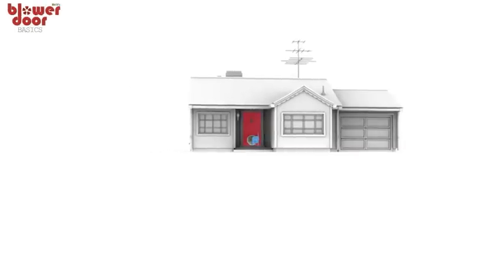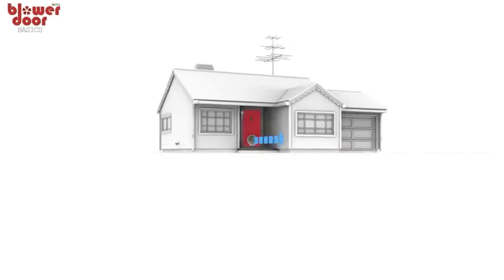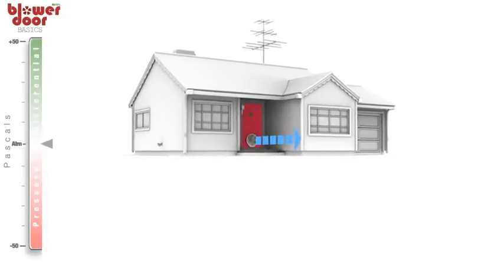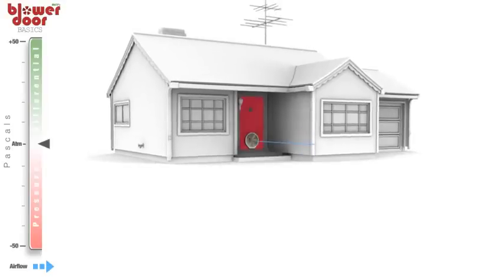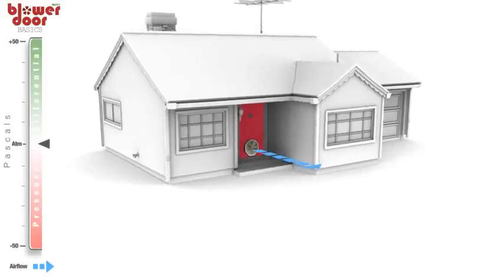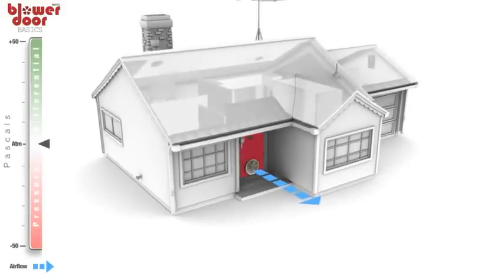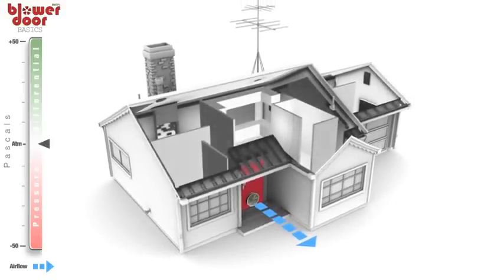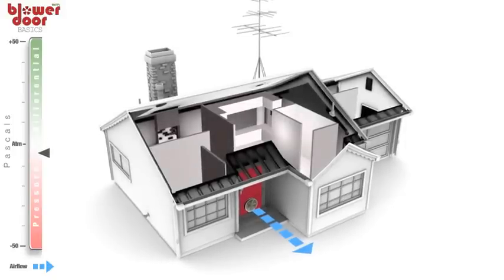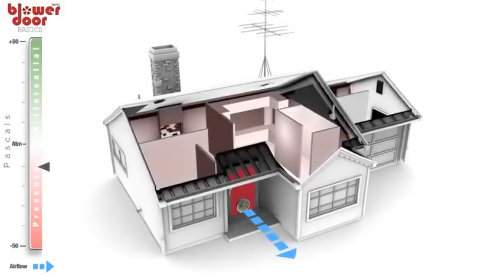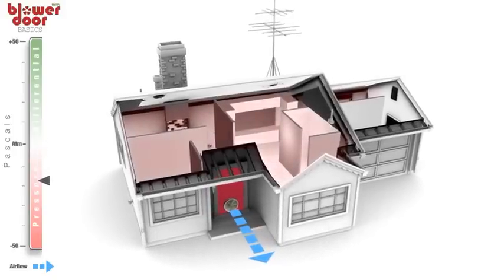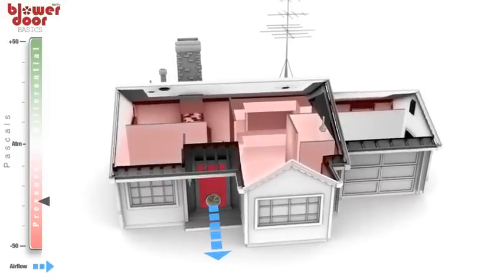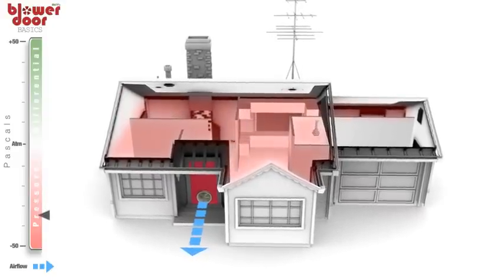When we run a blower door test, air from inside the home is pushed out by the fan, creating a pressure differential between the inside and outside environments. In its natural state, the pressure inside a home is the same as it is outside, right around atmospheric pressure, depending on elevation and the weather. The pressure drops as air exits the front door. We call this negative pressure inside the home: depressurization.